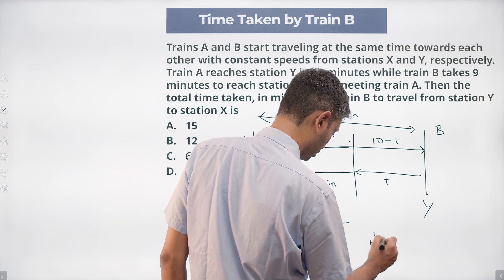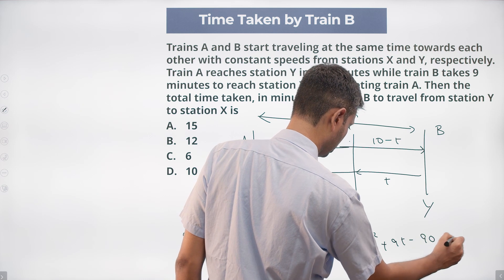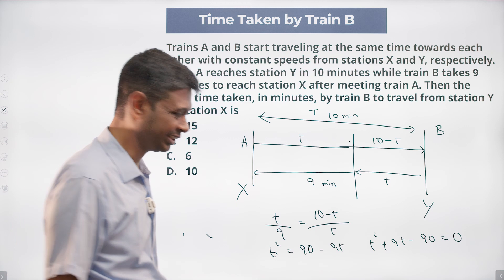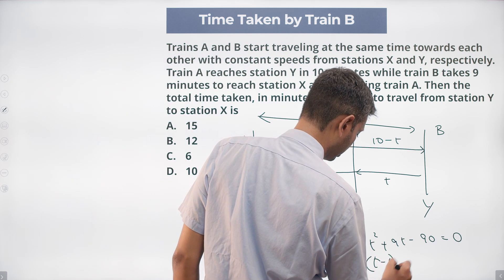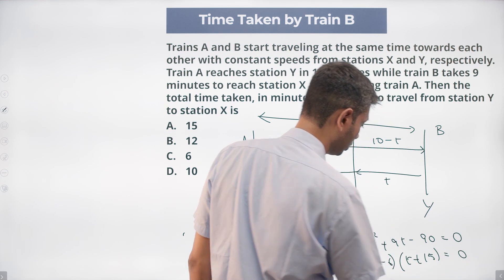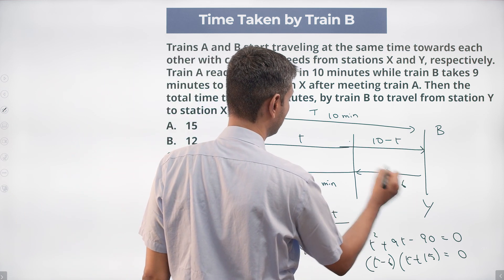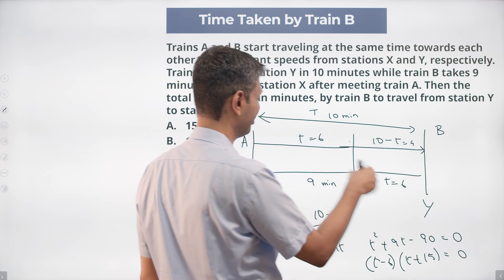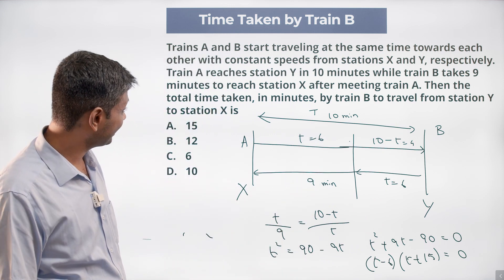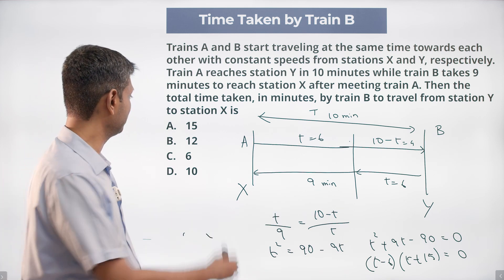Cross-multiplying: T² = 9(10 − T), giving T² + 9T − 90 = 0. Factoring: (T − 6)(T + 15) = 0, so T = −15 (not possible) or T = 6 minutes. The meeting happens at 6 minutes, the remaining time is 4 minutes for Train A and 9 minutes for Train B. The total time taken by Train B to travel from station Y to X is 6 + 9 = 15 minutes.